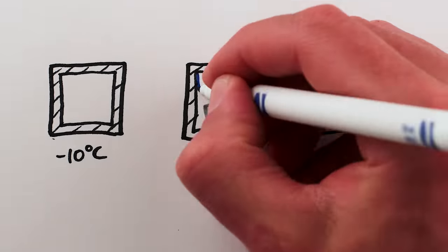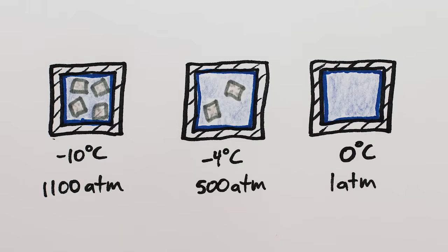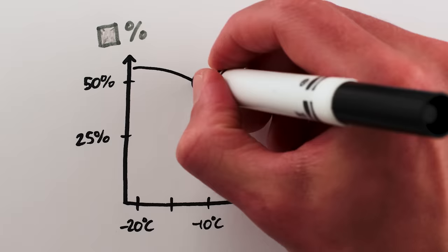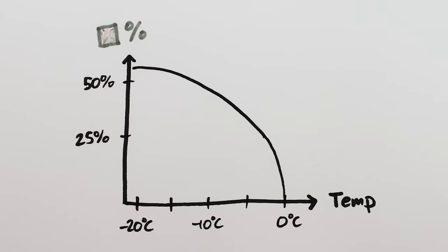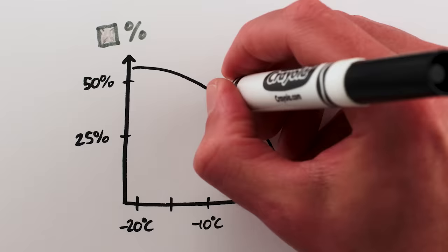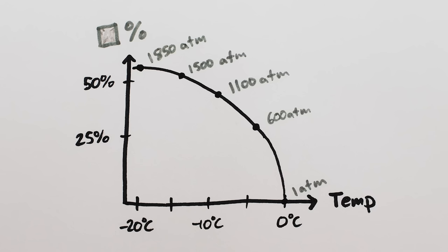The colder you make the container, the higher the percentage of ice, and the higher the pressure in the container. This graph shows the percentage of ice versus liquid when you cool a fixed volume of water to different temperatures. And I've labeled the pressures that are generated at each temperature, too.